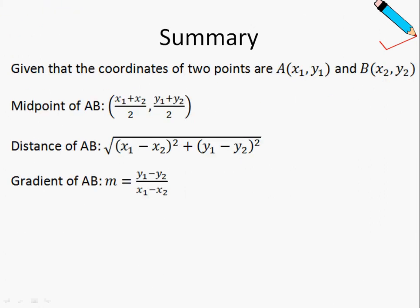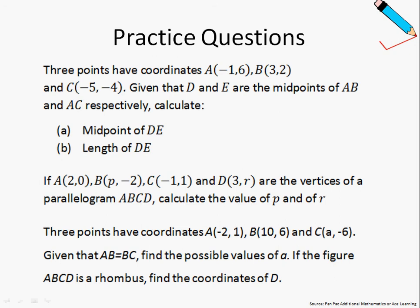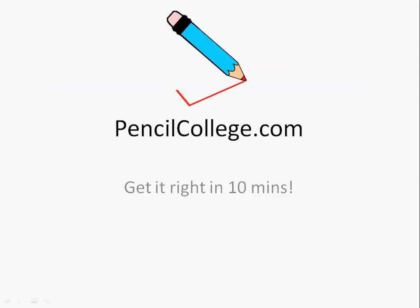With this example, I've come to the end of chapter 7.1. Just to summarize: given the coordinates of two points A and B, I can find the midpoint of AB, the distance of AB, as well as the gradient of AB. Before we end off, just want to leave you with some practice questions — pause the video here and take them down. Thank you for watching this video. For more videos, please log on to pencilcollege.com. See ya!